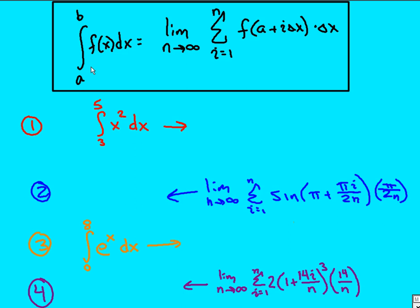This first problem has the integral from three to five of x squared. Here's how you're going to do this. First thing is that I need to have it be a limit, a limit as n goes to infinity. Always my summation will always be from one to n.